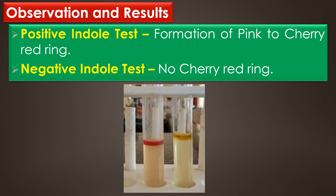Observation and results: A positive Indole test shows the formation of a pink to cherry red ring, and a negative Indole test shows no cherry red ring. This tube shows the positive Indole test — the formation of a pink to cherry red ring — and this tube shows the negative Indole test, with no cherry red ring.